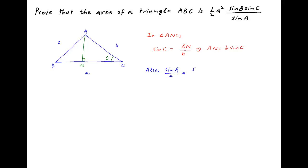Now applying the sine rule in triangle ABC, we get sine A upon a is equal to sine B upon b is equal to sine C upon c. This implies that the side B is equal to A sine B upon sine A.